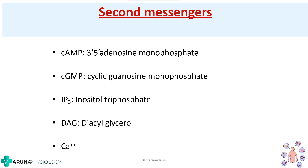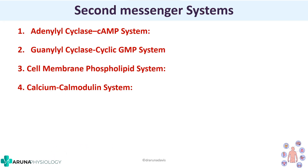Examples of second messengers are cyclic AMP, cyclic GMP, IP3 (inositol triphosphate), diacylglycerol, and calcium. Important second messenger systems include the adenylyl cyclase cAMP system, the guanylyl cyclase cyclic GMP system, the cell membrane phospholipid system, and the calcium-calmodulin system. We will now talk about each of these.